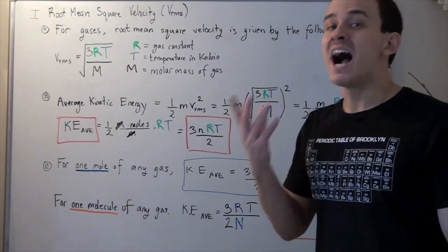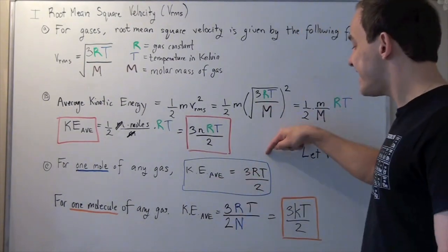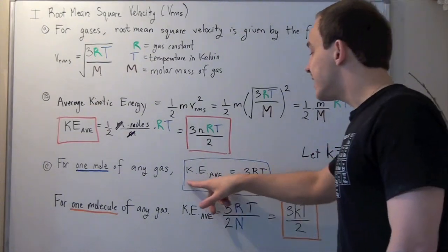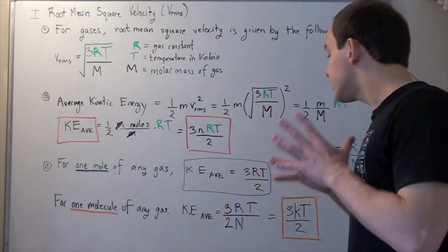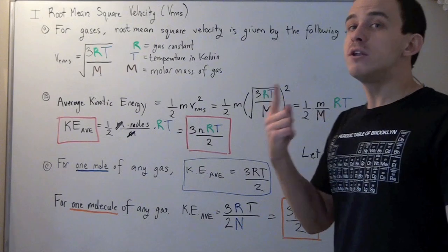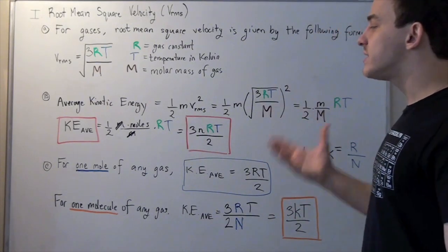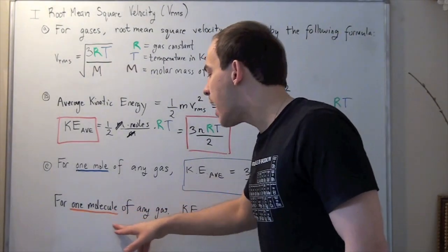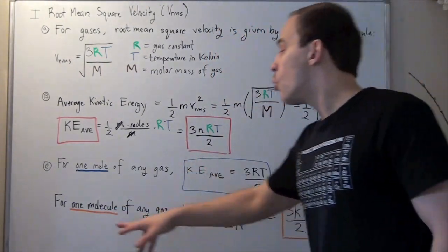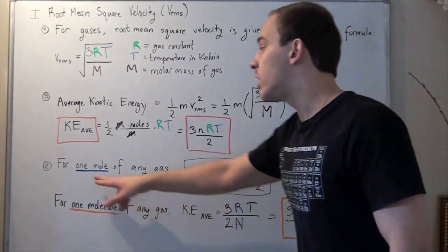So the only non-constant in this equation is T. So we see kinetic energy depends strictly on temperature. Now suppose instead I want to find 1 molecule. What's the kinetic average of 1 molecule of gas and not 1 mole?